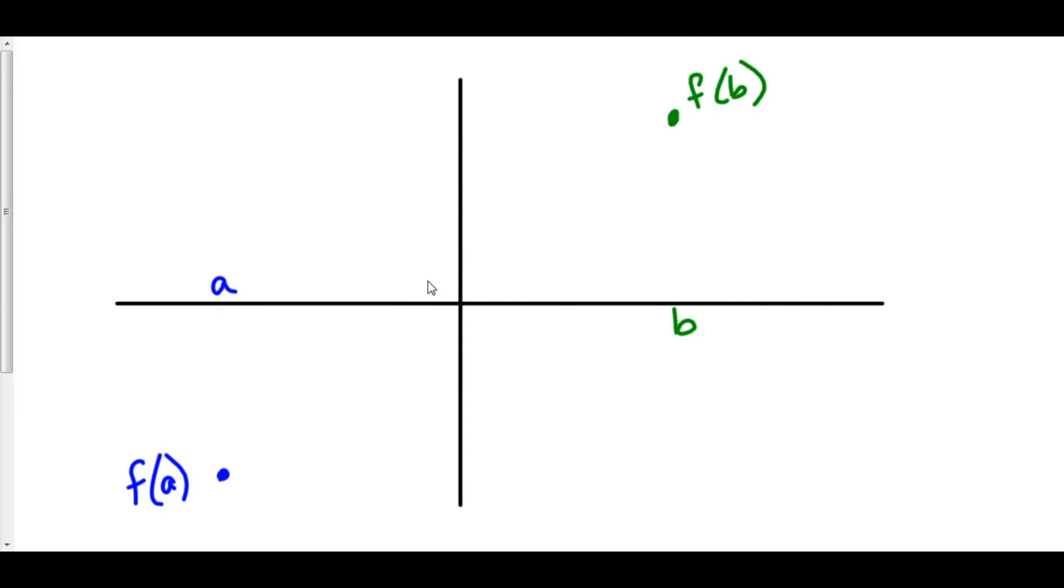That's one such example. Here we're going to let c, the value between f of a and f of b, equal zero. So here's c equals zero right here on the x-axis. The question is, can you draw a line from f of a to f of b without picking up your pencil that doesn't go through c equals zero? The answer is no.